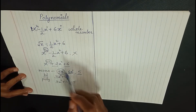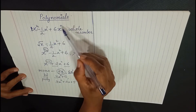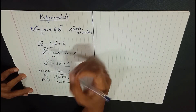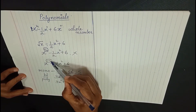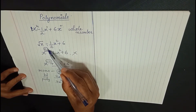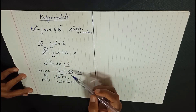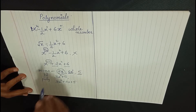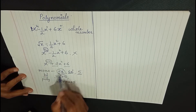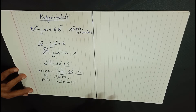In summary, algebraic expressions can be called polynomials when the degree is either zero or a natural number — that is, a whole number. It cannot be a negative number or a rational number. The different types based on number of terms are: monomial (one term), binomial (two terms), trinomial (three terms), and polynomial (more than three terms).